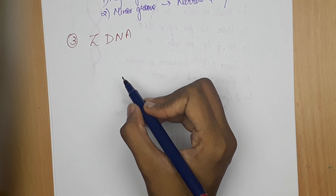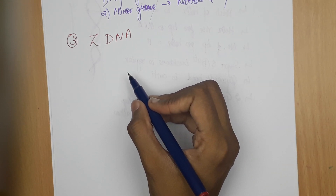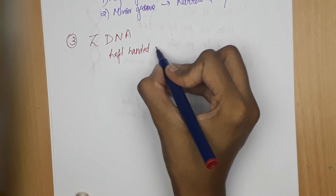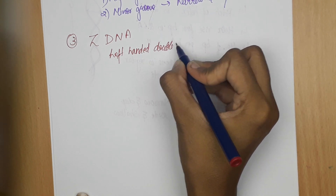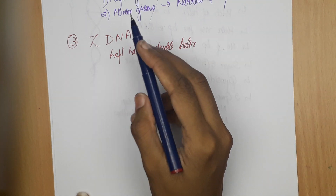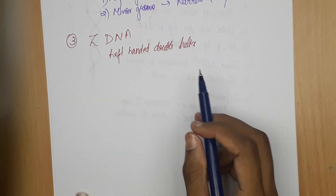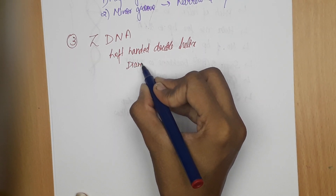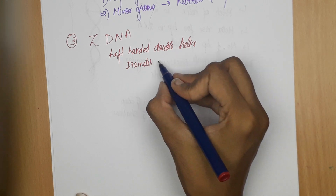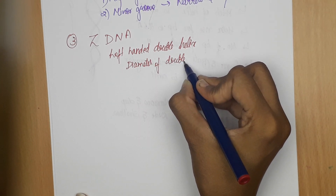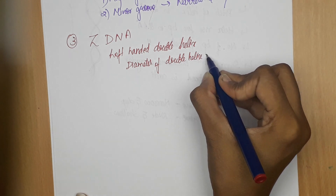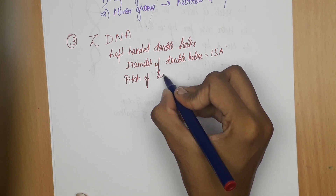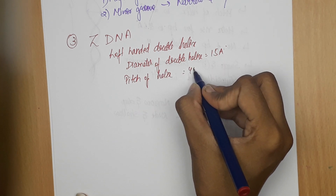Z-DNA is different from the other DNA forms because it is a left-handed double helix. In A-DNA and B-DNA, both are right-handed, but Z-DNA is left-handed. The diameter of this double helix is 15 angstroms, and the pitch of the helix is 45 angstroms.